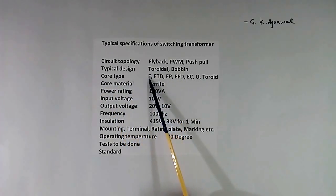Core type, what type of core we want: E, ETD, EP, there are so many varieties. Then core material, we have to tell. For example ferrite, or some other material.